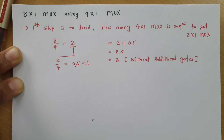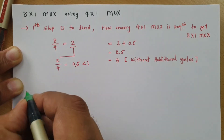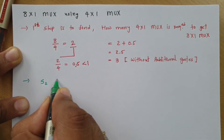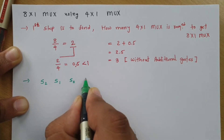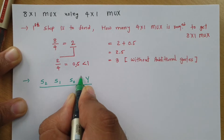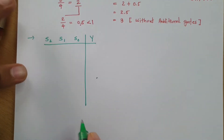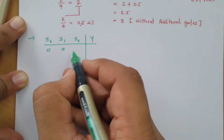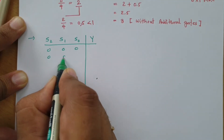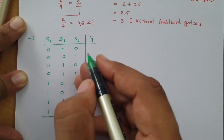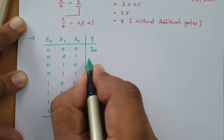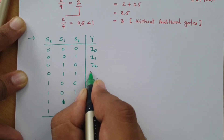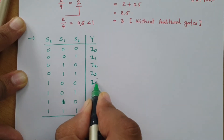Before that, let me give you the truth table for the 8x1 multiplexer. In an 8x1 multiplexer, I have 3 selection lines S2, S1, S0 and output Y. The output Y is based on inputs. There are 8 combinations of the selection line. When selection line is 000, output is I0. When 001, output is I1. When 010, output is I2. When 011, output is I3. When 100, output is I4.